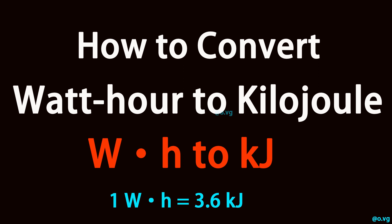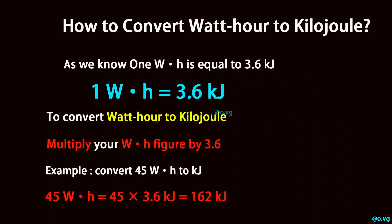How to convert watt-hour to kilojoule. As we know, 1 watt-hour is equal to 3.6 kilojoule. To convert watt-hour to kilojoule, multiply your watt-hour figure by 3.6.